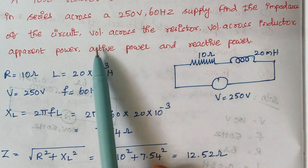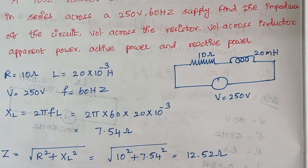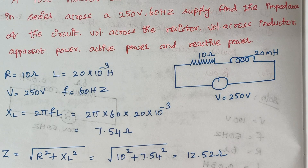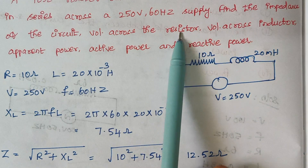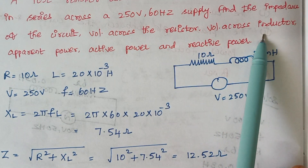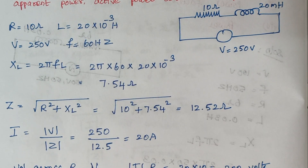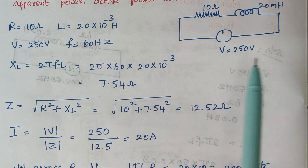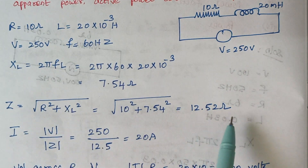The next thing is voltage across the resistor and voltage across the inductor. Voltage is given by the formula I × R. We need to calculate I first so that we can calculate the voltage drop across the resistor as well as across the inductor. I is given by V by Z.